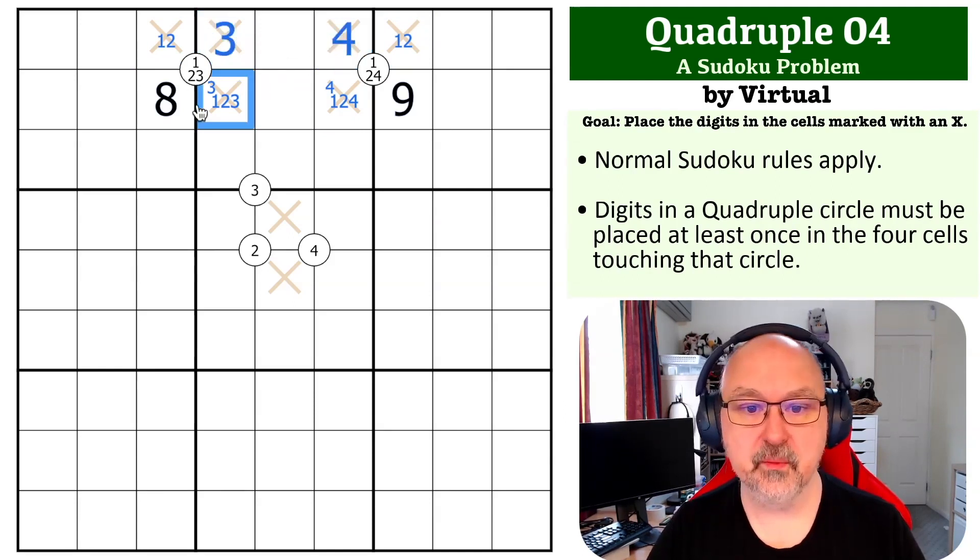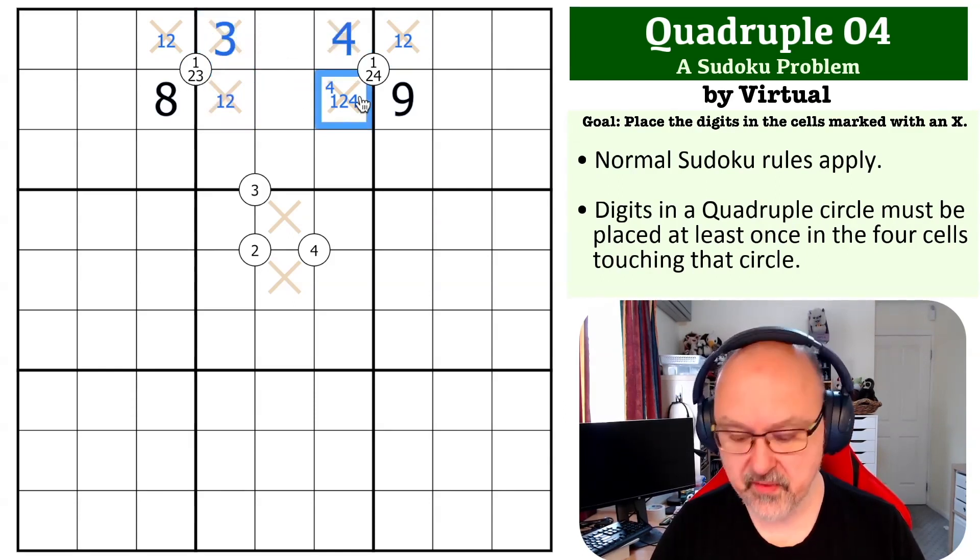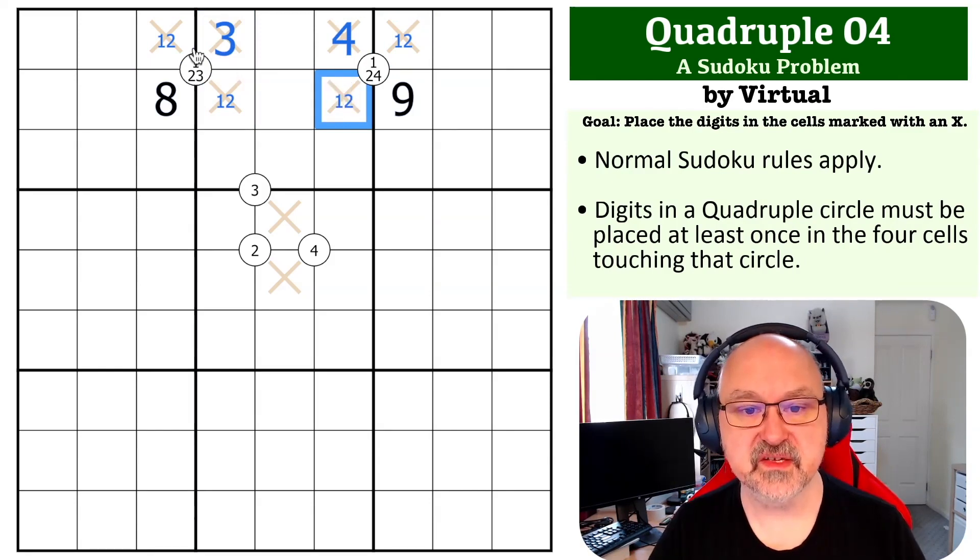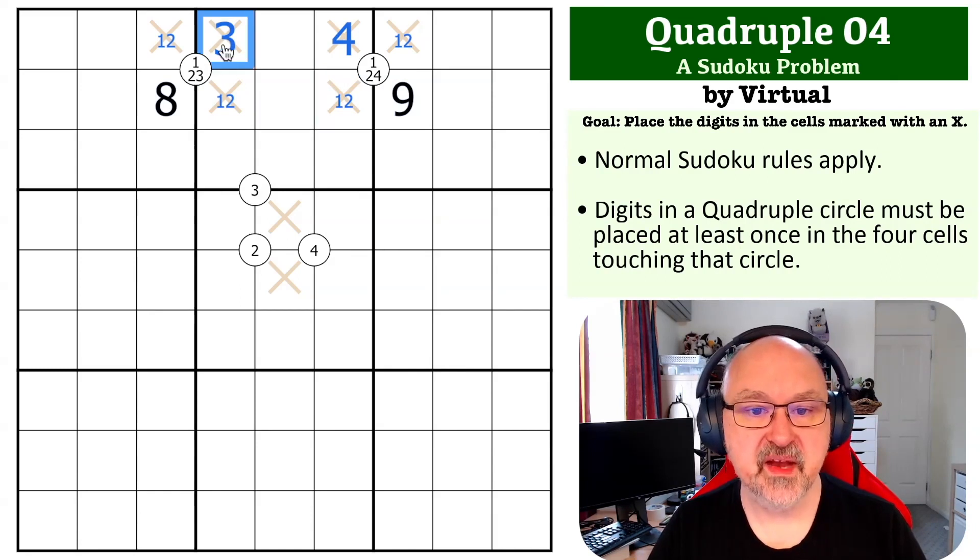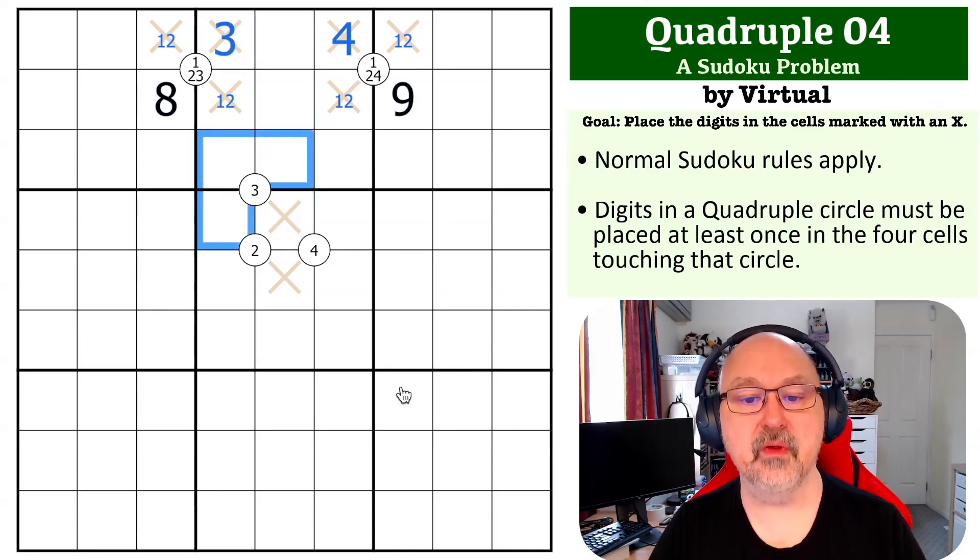Now we've got a one, two pair in the row, so we can take one and two out of those. This becomes the three, this becomes the four, and we can take the three out of here and the four out of here. That works quite well.